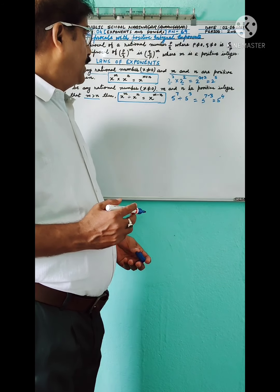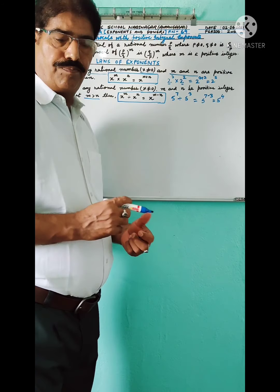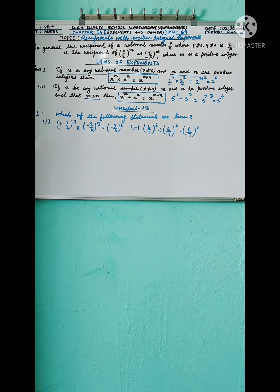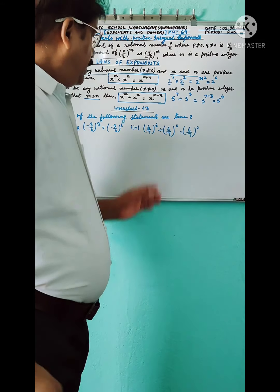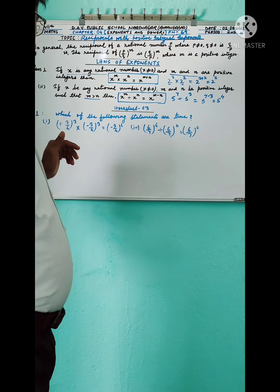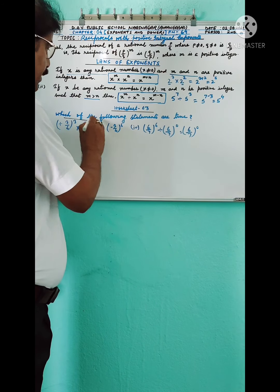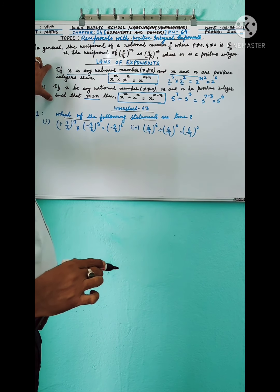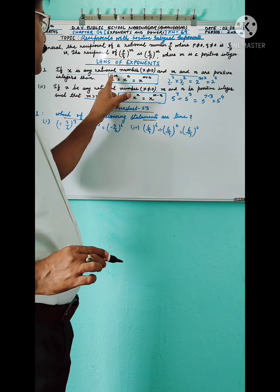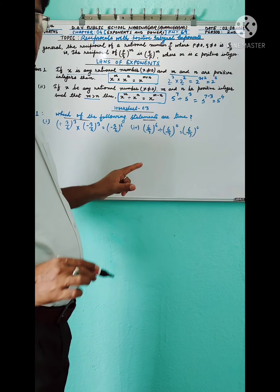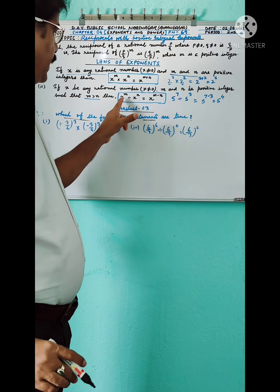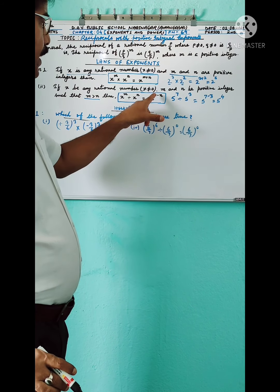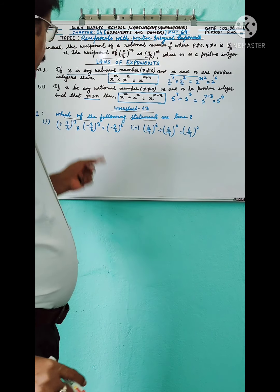Let us move to worksheet 3. The first question asks us to determine whether each statement is true or false. We are given two laws: first law — if bases are the same, in multiplication the exponents are added; second law — if bases are the same, in division the exponents are subtracted, where m is greater than n.